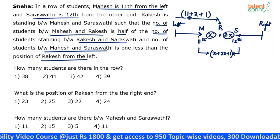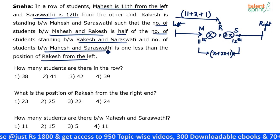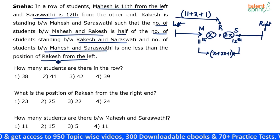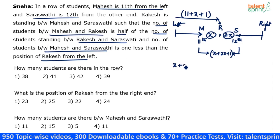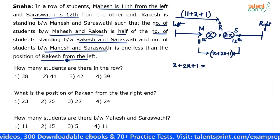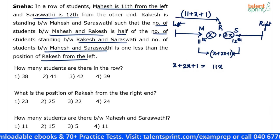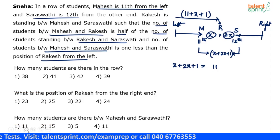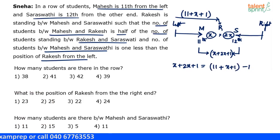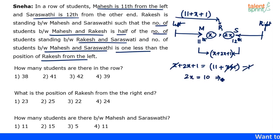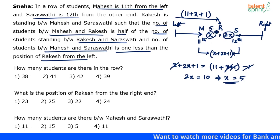The position of Rakesh from the left is 12 plus x. Now write the equation: number of students between Mahesh and Saraswati equals one less than the position of Rakesh from the left. So x plus 2x plus 1 equals (12 plus x) minus 1. Solving: x and x cancel on both sides, plus 1 and minus 1 cancel, giving 2x equals 10, which implies x equals 5.